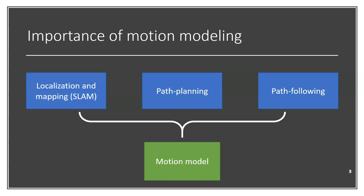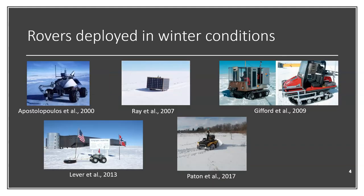And lastly, for path following, it can enable high-performance path following by using good knowledge of the vehicle behavior. We took a look in the literature and tried to find the rovers that were deployed in winter conditions and that included some kind of autonomous navigation. We cited five following articles. However, we found that no literature was focusing mainly on motion modeling for autonomous robots in snowy environments.